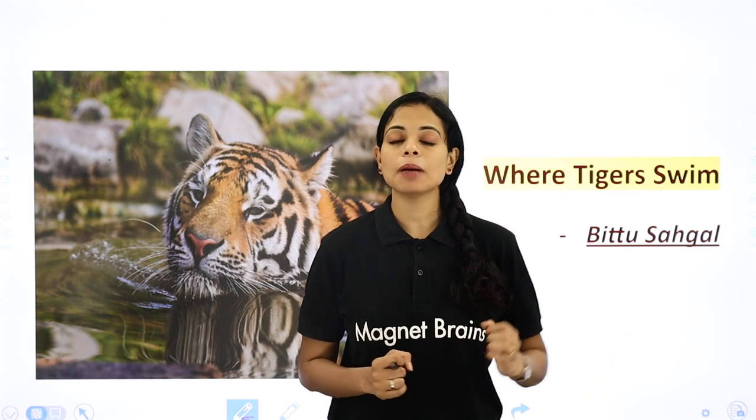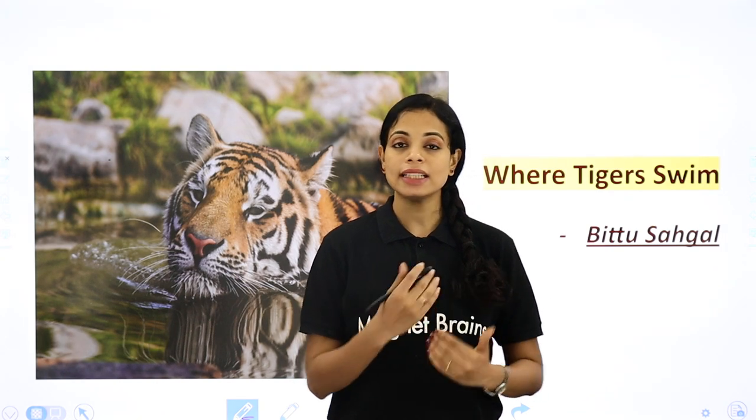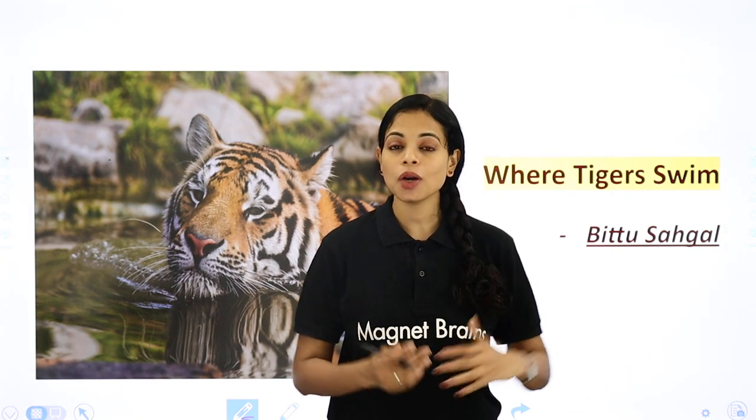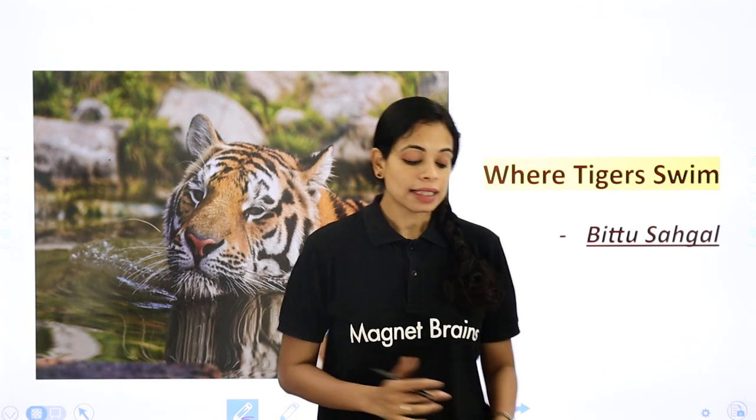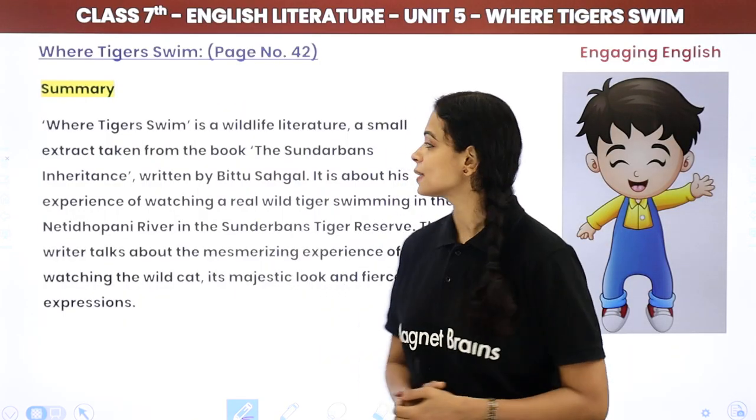In this chapter, we have understood two incidents. The writer has shared two real incidents: one in which he has an encounter with the Royal Bengal Tiger, and one where he talks about how tigers are going extinct because of human selfishness. Now we will see the summary of this chapter followed by the question answers.